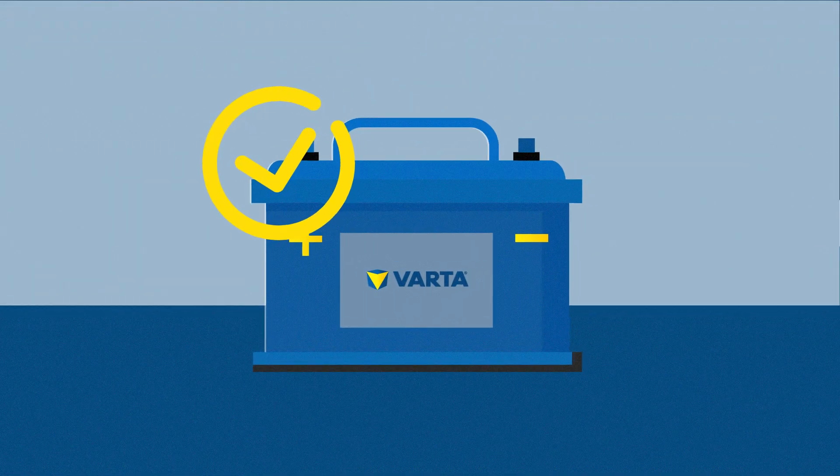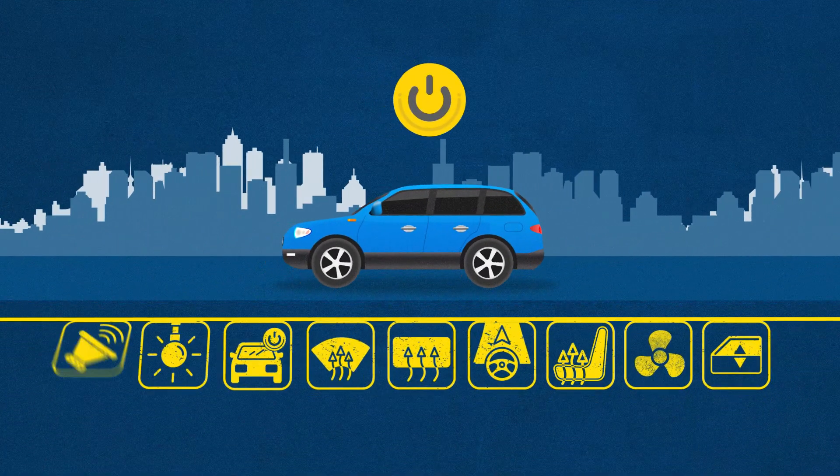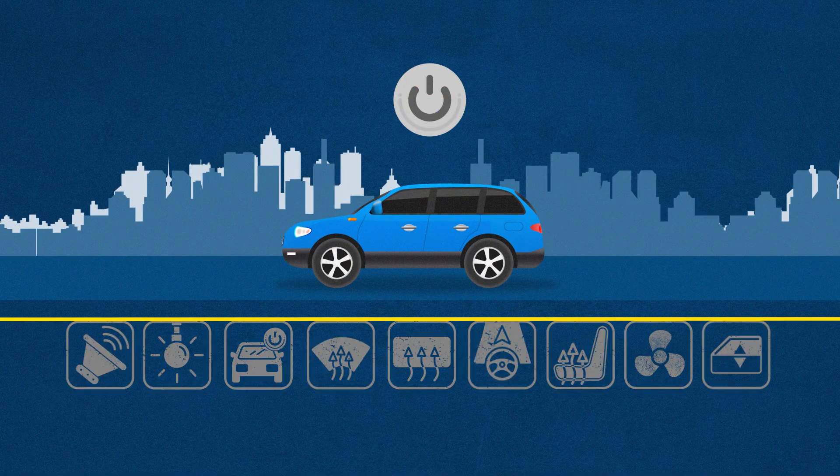To keep your car battery in good condition, check regularly that the exterior of the battery is dry and clean to avoid any creeping currents that may discharge the battery. When you turn off the engine, turn off all electronic devices.